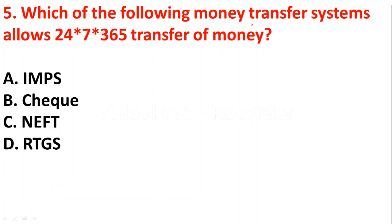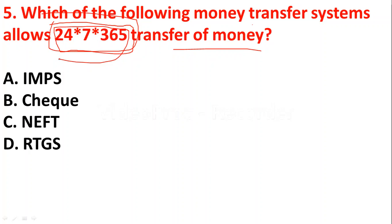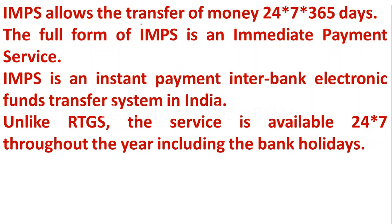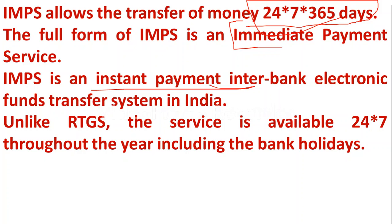Question five: which money transfer system allows 24×7×365 days transfer of money — IMPS, cheque, NEFT, or RTGS? The right answer is IMPS. IMPS stands for Immediate Payment Service. It is an instant interbank electronic fund transfer system in India. Unlike RTGS, the service is available 24×7 throughout the year, including bank holidays.